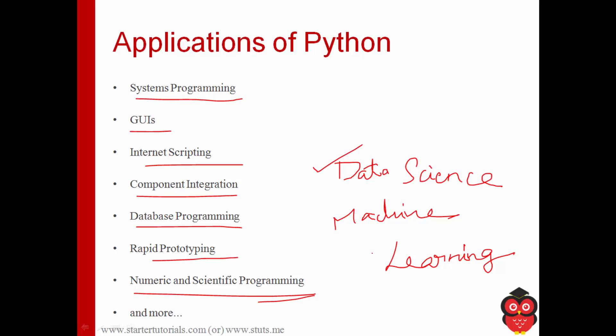The reason why Python is becoming more popular nowadays is because of these things: data science and one more thing called machine learning. Python supports many libraries which support both data analytics in data science and also machine learning. Since these things are becoming popular, automatically Python is also becoming popular.